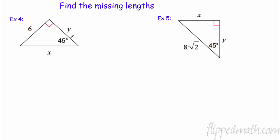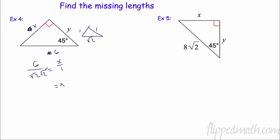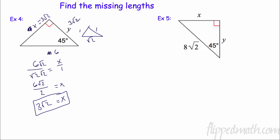Let's try this one. Draw the reference triangle: 1 : 1 : √2. This time the hypotenuse is 6, so we set up 6/√2 = x/1, which means x = 6/√2. We can't have a radical in the denominator, so we rationalize: multiply by √2/√2 to get 6√2 over √4 = 6√2 over 2 = 3√2. So both legs are 3√2.